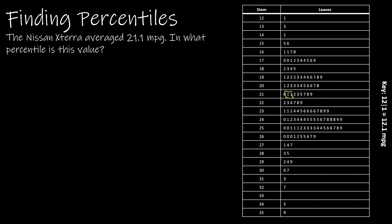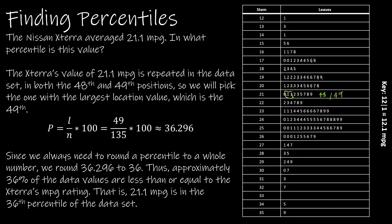If there are two of them, I'm going to count through the data: 1, 2, 3, 4, 5... continuing through all the values... 47, and that's 48th and 49th. Now we're going to pick the one with the largest location value, which is obviously 49. That's the number I'm going to use in my equation.